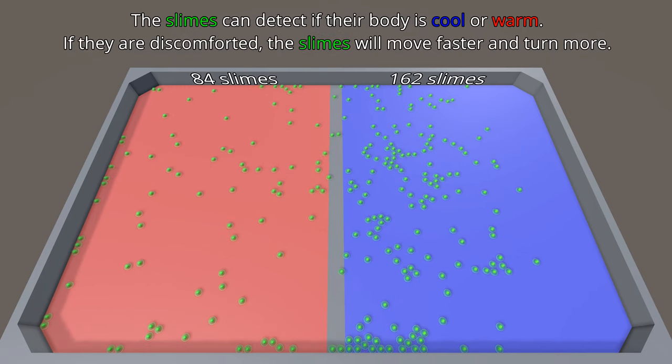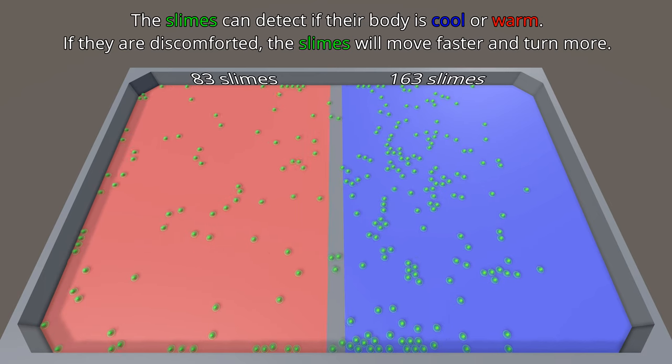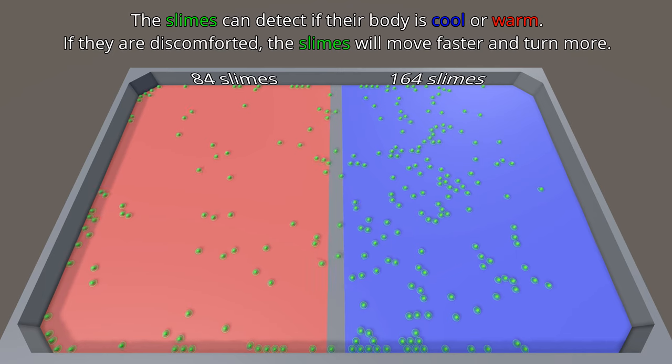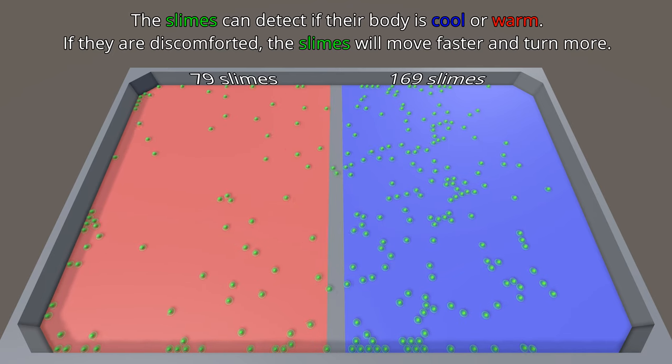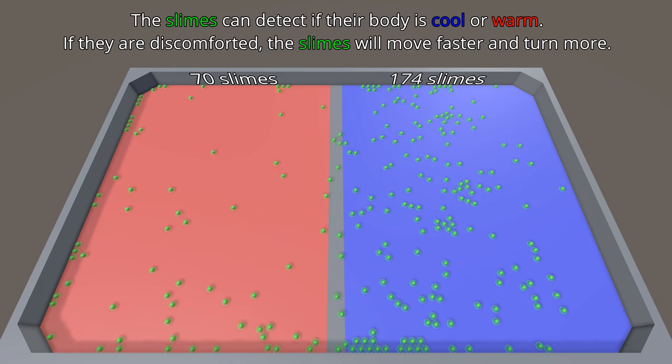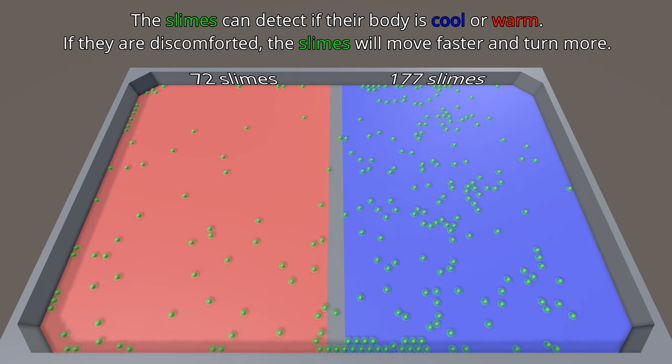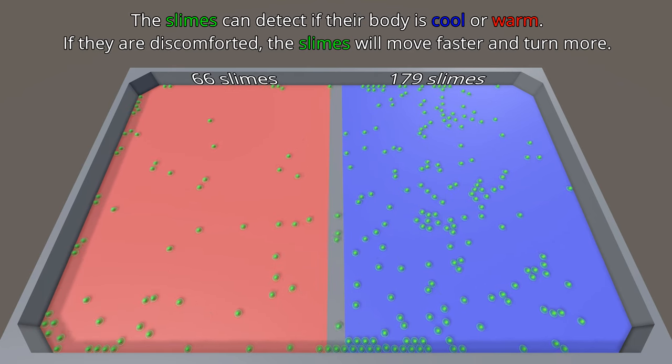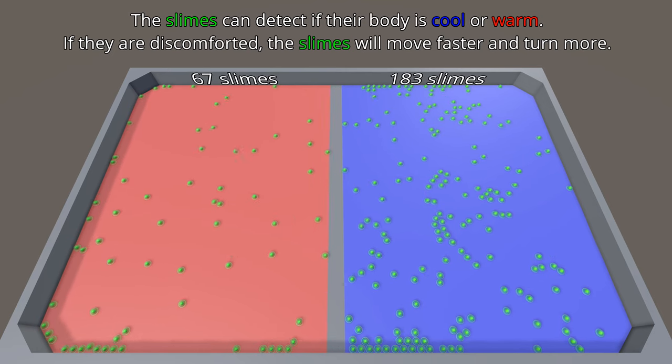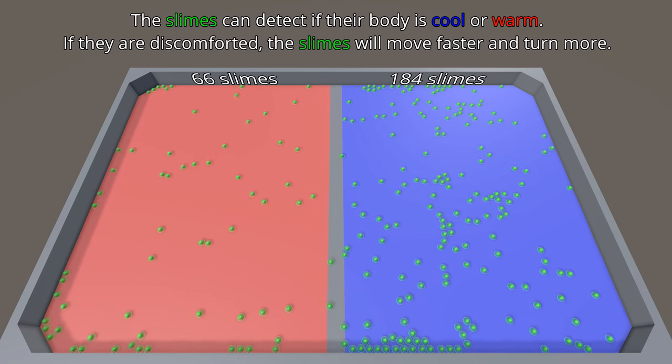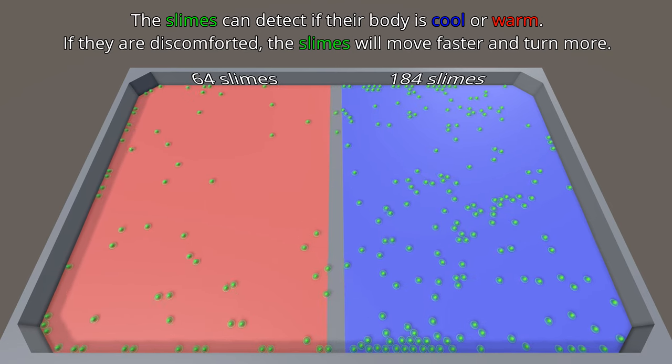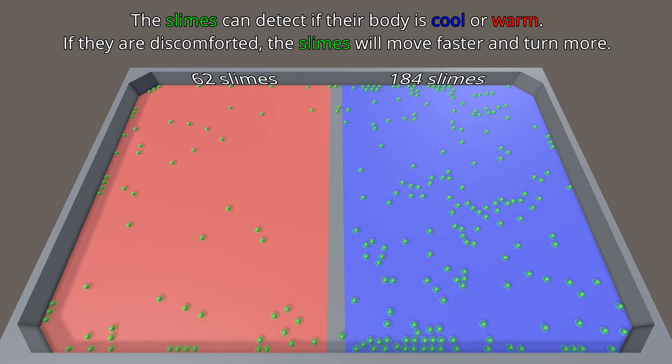They can, however, detect if their own body is cool or warm. And if they stumble into the red area, they're going to feel warmer. And if they stumble into the blue area, they're going to feel cooler. What the slimes can do is use kinesis to adjust their random wandering behavior. If they become too warm, they will move a little faster and they will turn a little more. If they become cool, they will move a little slower and turn a little less.